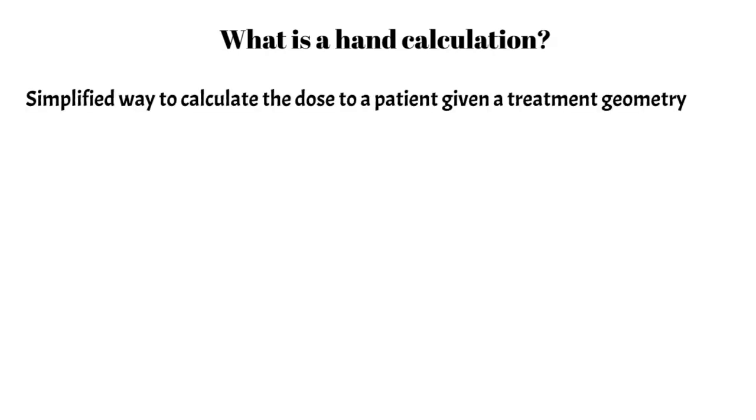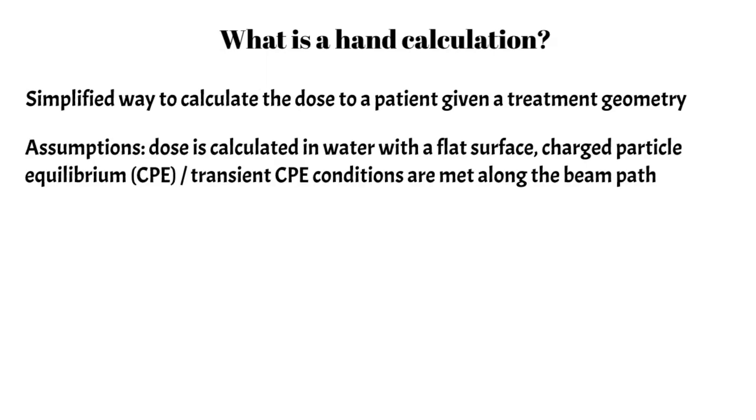In essence, it's a simplified way to calculate the dose to a patient given some arbitrary treatment geometry. The hand calc itself makes a few assumptions. One is that dose is calculated in water with a flat surface. Another is that charged particle equilibrium or transient charged particle equilibrium conditions are met along the beam path.